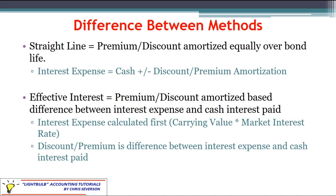Now let's talk about the difference between the two methods. As I mentioned, with the straight-line method we calculate interest expense by taking cash plus or minus the discount or premium amortization. In other words, we calculate cash and then the discount or premium amortization first and we back into interest expense. Under the effective interest method that we will be looking at later, we don't back into interest expense — we back into the discount or premium. The premium or discount under the effective interest method is amortized based on the difference between the interest expense and the cash interest paid.